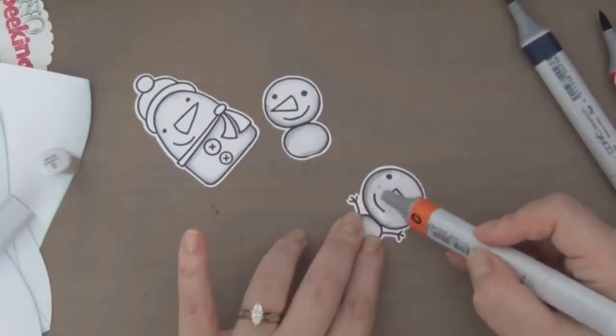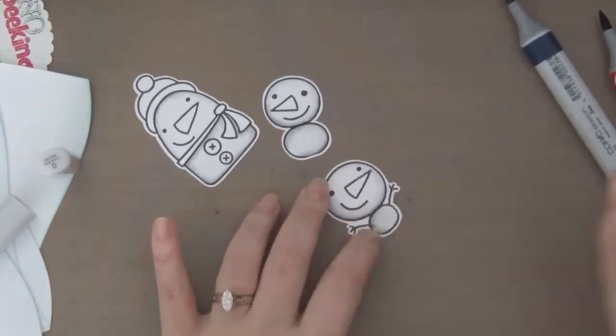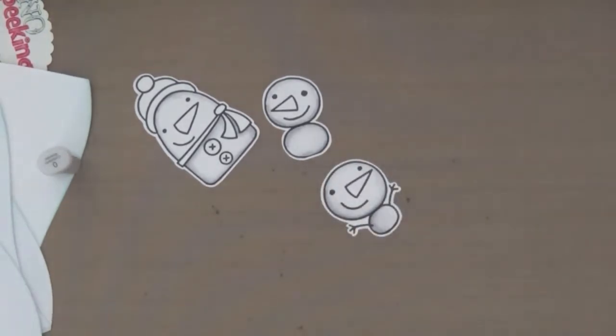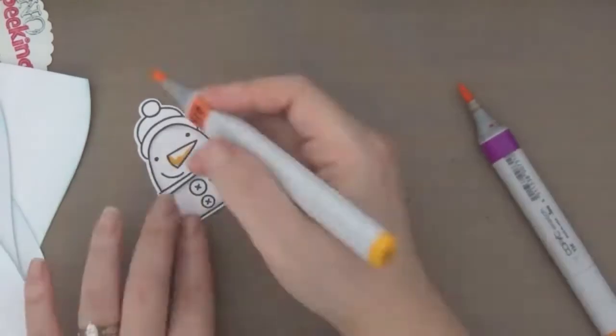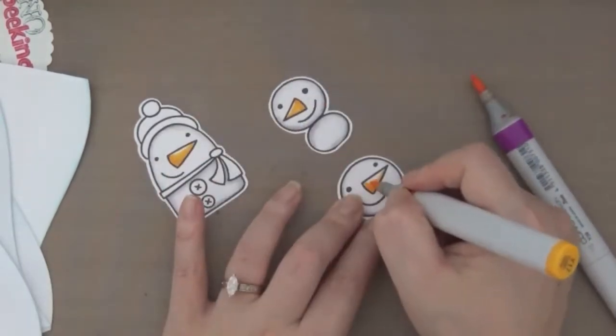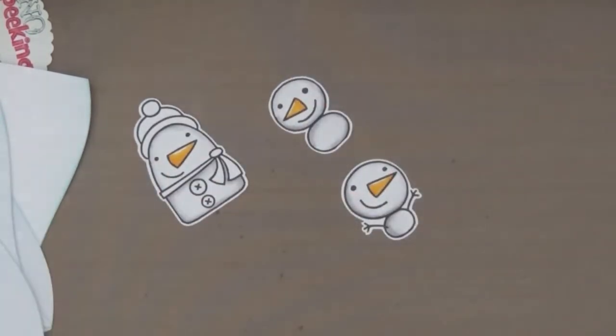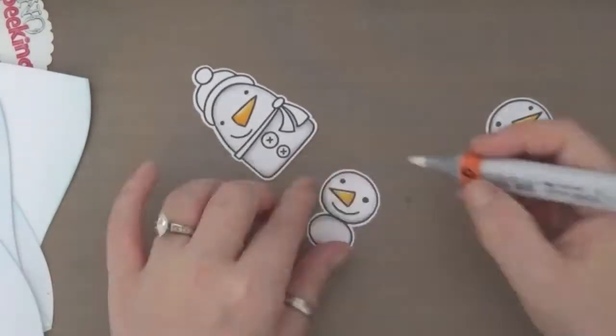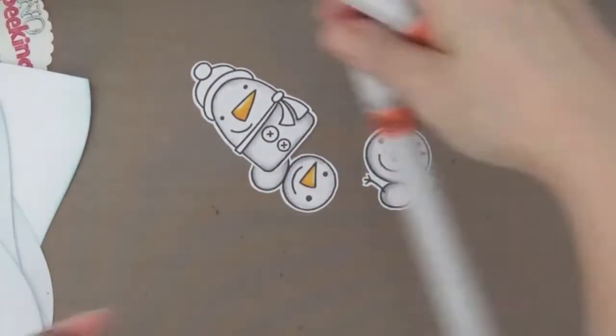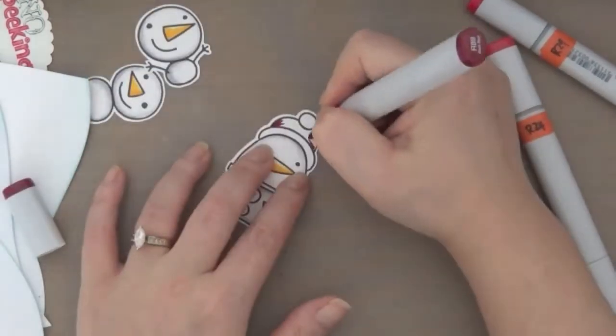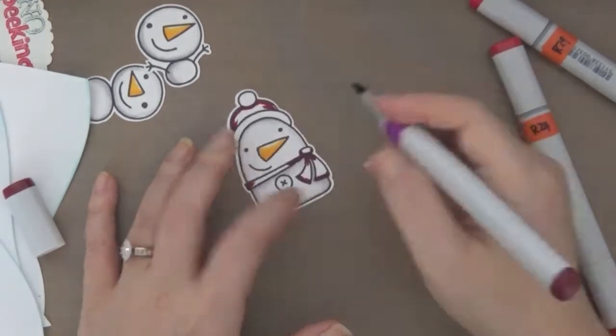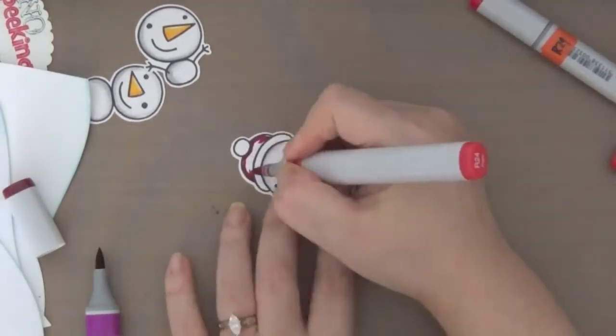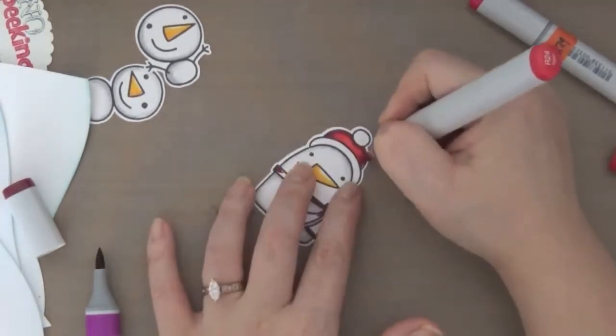Pretty easy to color. These are super cute. And then for their carrot nose I'm using two shades. I think it's a dark yellow and a medium yellow. Now I'm putting some highlights at the top of their nose. And for the hat and the scarf I'm using R89, R29, and R24.